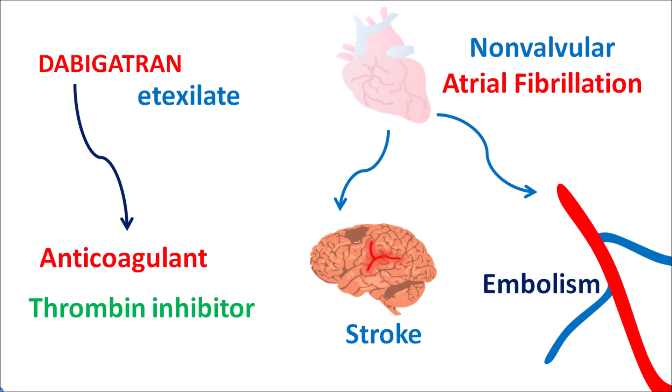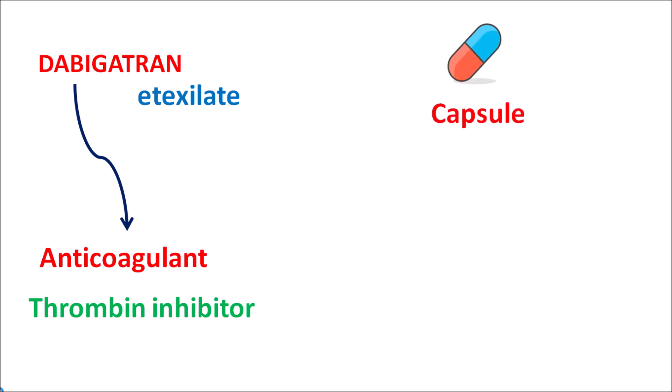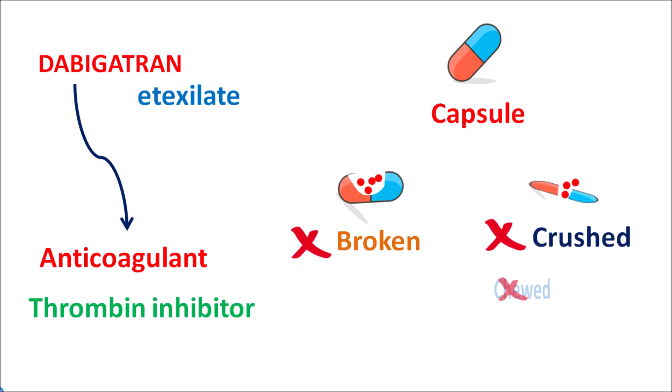This drug should not be given in patients with a mechanical prosthetic heart valve, as it reduces further cardiac functionality in such patients. Dabigatran is available as a capsule that should be swallowed completely — it should not be broken, crushed, or chewed. Since dabigatran etexylate is a prodrug, it is formulated as a capsule, and within the body it is converted into its active metabolite, dabigatran.